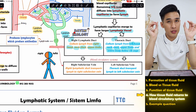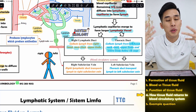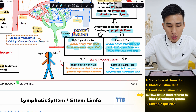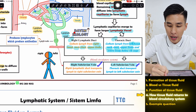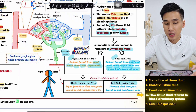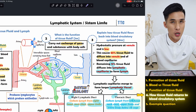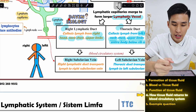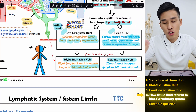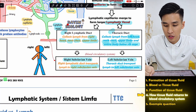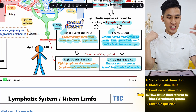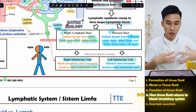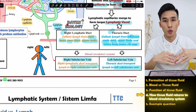These two lymphatic vessels connect to two veins: the right subclavian vein and the left subclavian vein. Once they reach these two veins, they have returned to the blood, because a vein is a blood vessel. The right lymphatic duct transports lymph into the right subclavian vein, and the thoracic duct transports lymph into the left subclavian vein. These subclavian veins are located at your collarbone, which connects back to your heart.